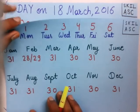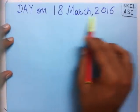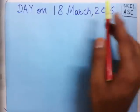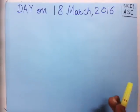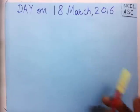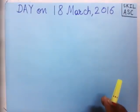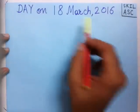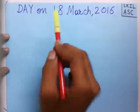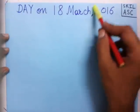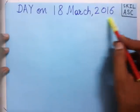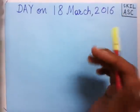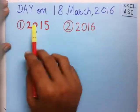Now we come to the question. To find the day on this date, our aim is to find the number of odd days for this date. There are a few steps which you must follow to find the number of odd days for a given date. The first step is we have to make two parts from this given year.